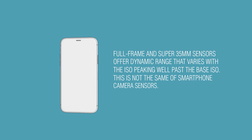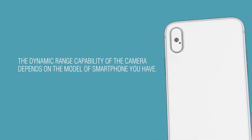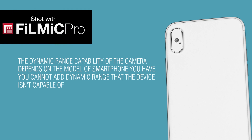The total dynamic range of the sensor will be much less than what you can get from a mirrorless, DSLR, or cinema camera. Currently, even high-end smartphone cameras like the iPhone 11 Pro Max can capture no more than 10 stops of usable dynamic range without the aid of multi-sample compositing like HDR. The dynamic range capability of the camera depends on the model of smartphone that you have — you cannot add dynamic range that the device isn't capable of. Third-party applications like FiLMiC Pro have been designed to help you maximize the available dynamic range of the image buffer of your phone.